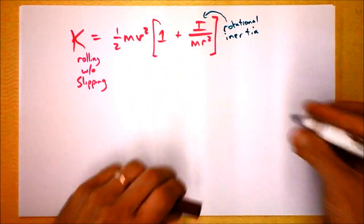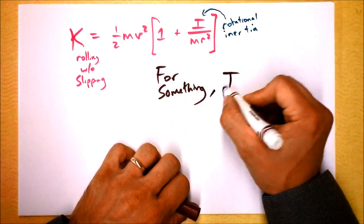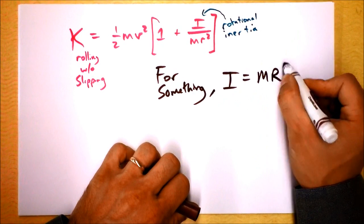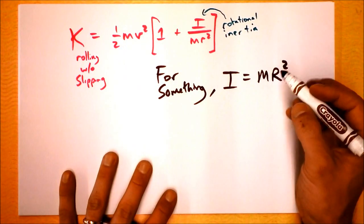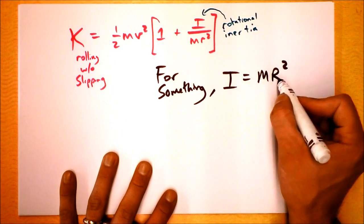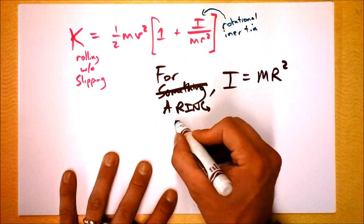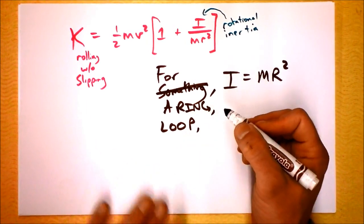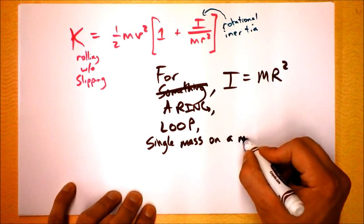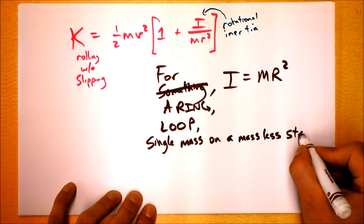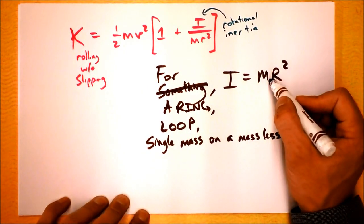Do you remember the forms of I that can be present though? I remember there was some object that actually had I, for something, we had I is equal to m r squared. And that's, what was that? Oh man, I don't remember the last lecture. Maybe you should go watch it again. This is m times r squared. This is the case for a ring or a loop, or a single mass on a massless stick like that apple that we had in the previous video. So for a ring, a loop, or a single mass on a massless stick, we get I is equal to m r squared.